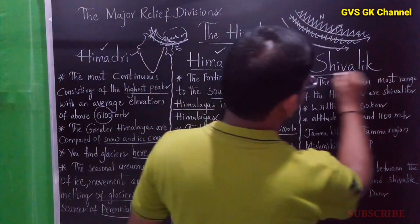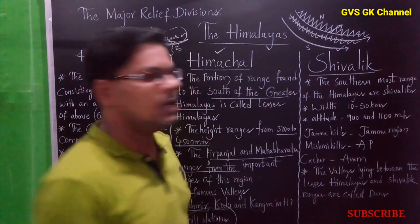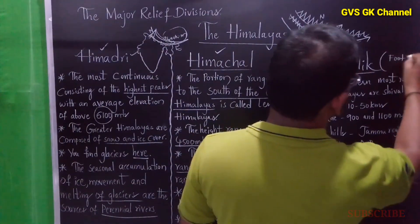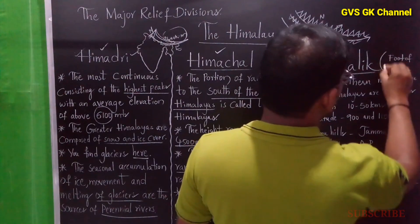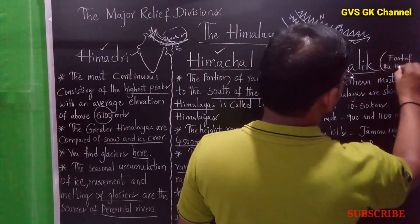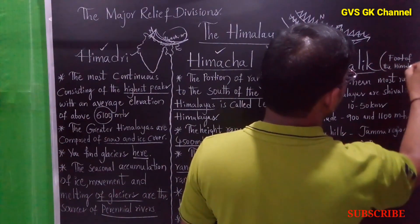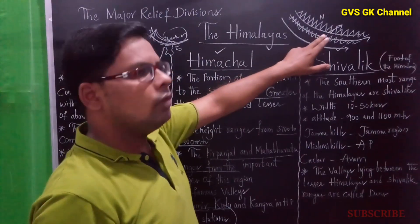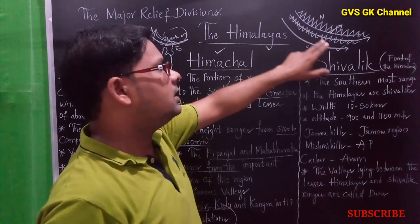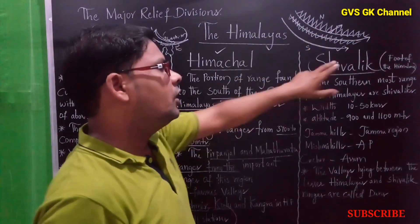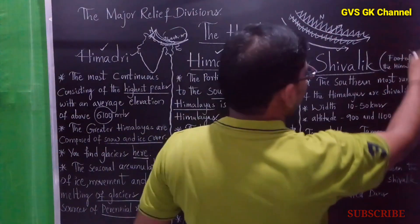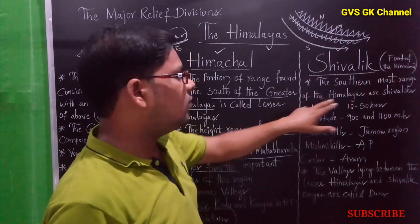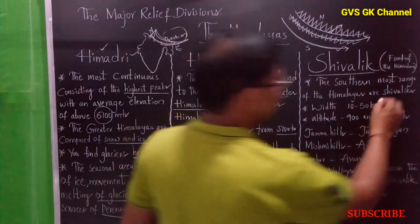Now we are going to discuss the third important range of the Himalayas — the Shivaliks. It is also called the foot of the Himalayas. The reason it is called the foot of the Himalayas is that it is the southernmost range. Due to that, it is called the foot of the Himalayas, and the southernmost range of the Himalayas is called Shivalik.